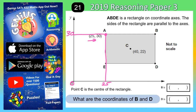Now do the same for C. Draw a line straight down and straight across to the x and y axes. Point C is 40 along the corridor, so that number is 40, and 22 up the side, so that number is 22. Point C is at (40, 22).